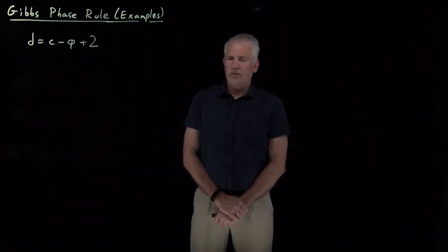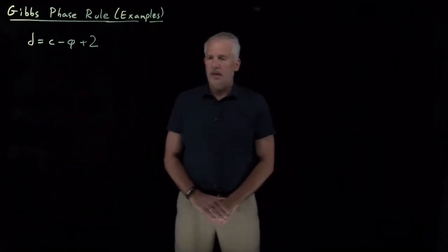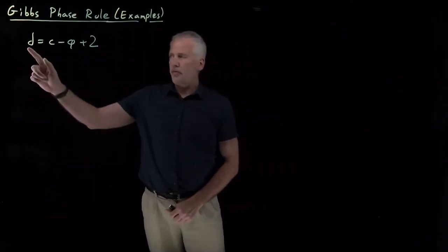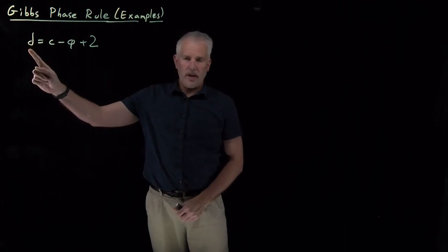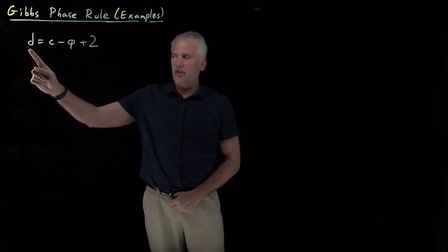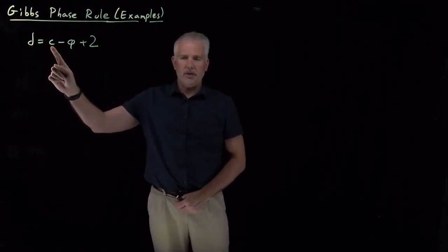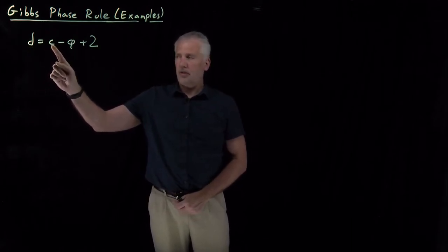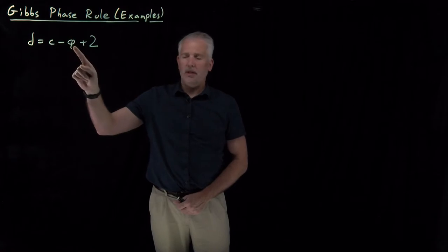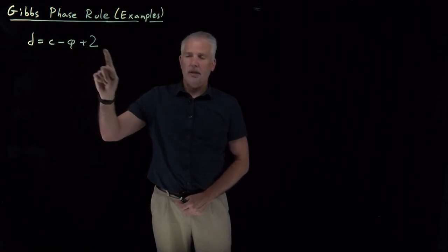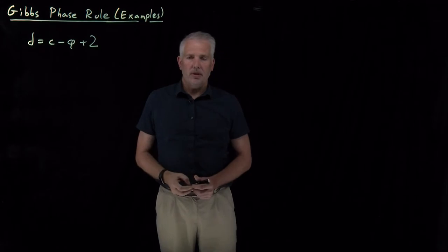The Gibbs phase rule tells us that the number of degrees of freedom — the flexibility we have to choose — is equal to the number of components of a system, minus the number of phases coexisting in equilibrium in that system, plus two.